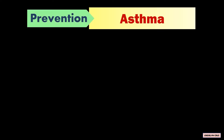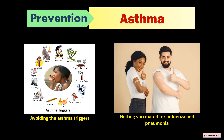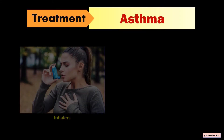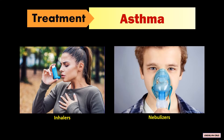Asthma can be prevented by avoiding the asthma triggers and getting vaccinated for influenza and pneumonia. Inhalers and nebulizers are the key components of asthma treatment.